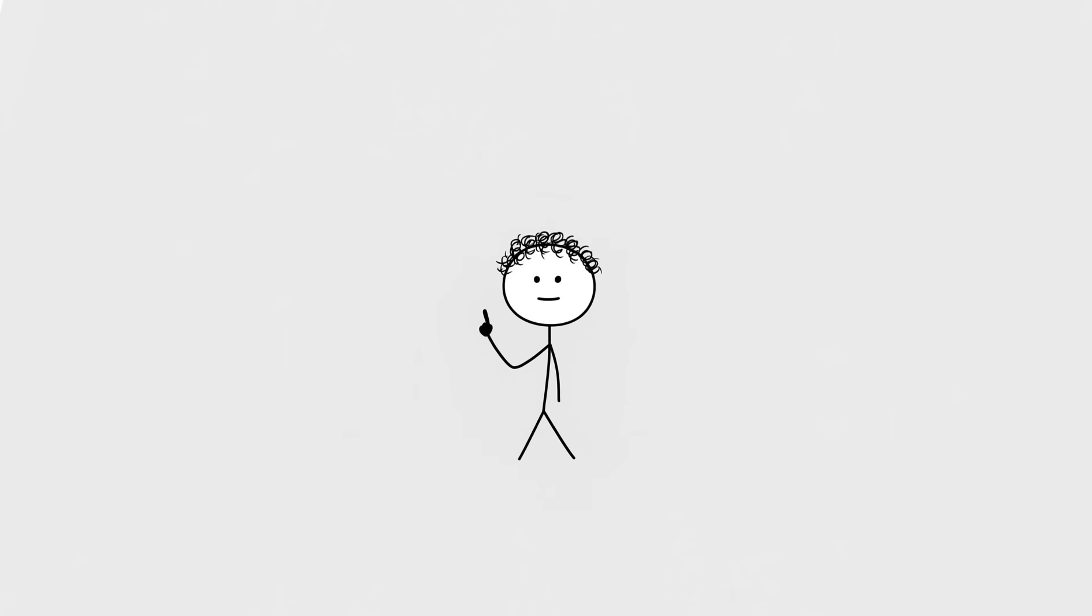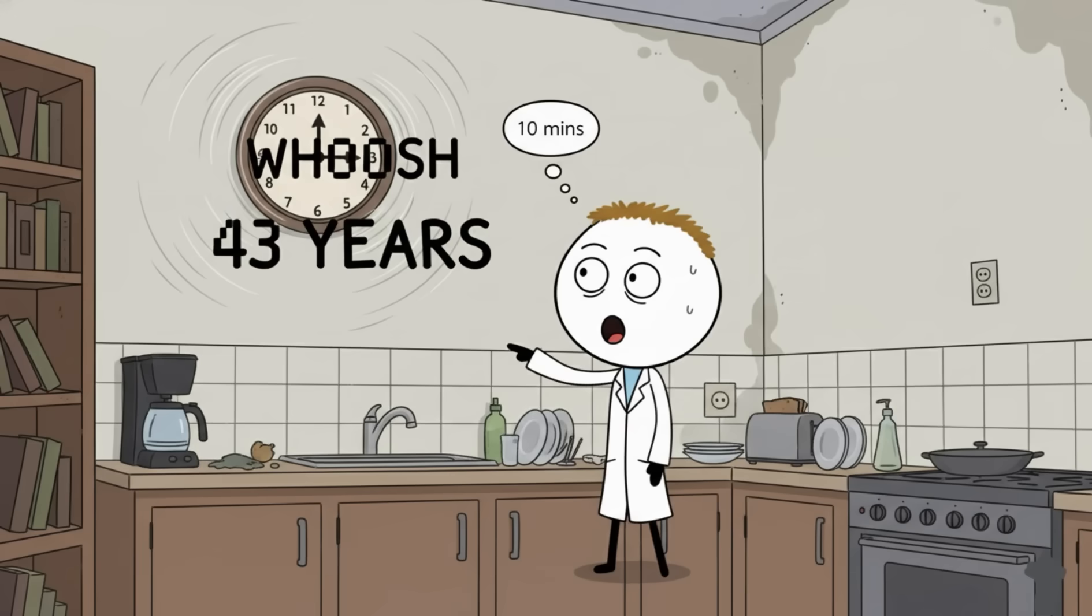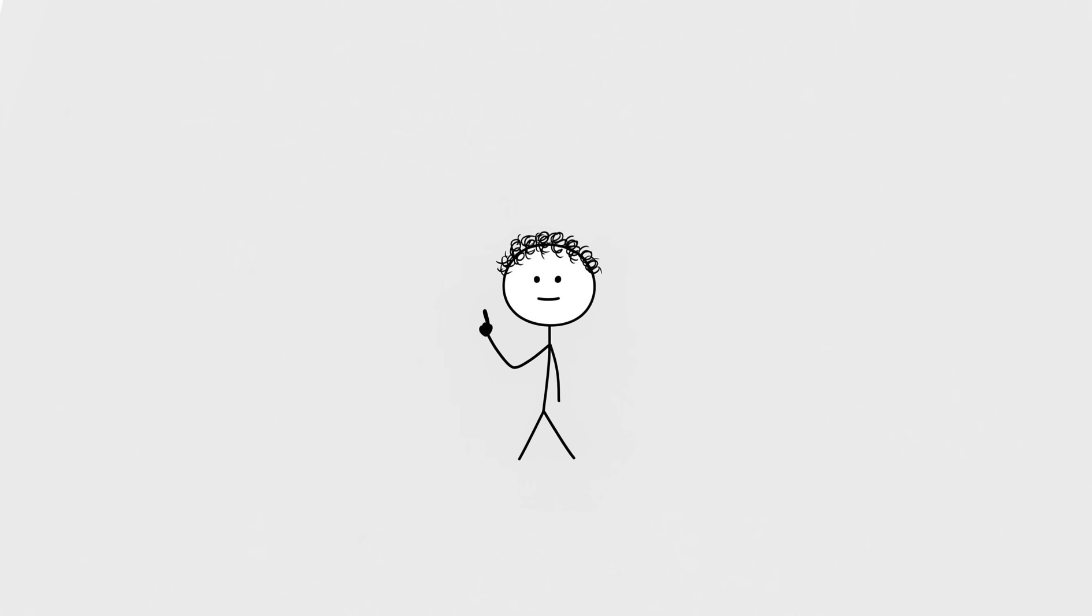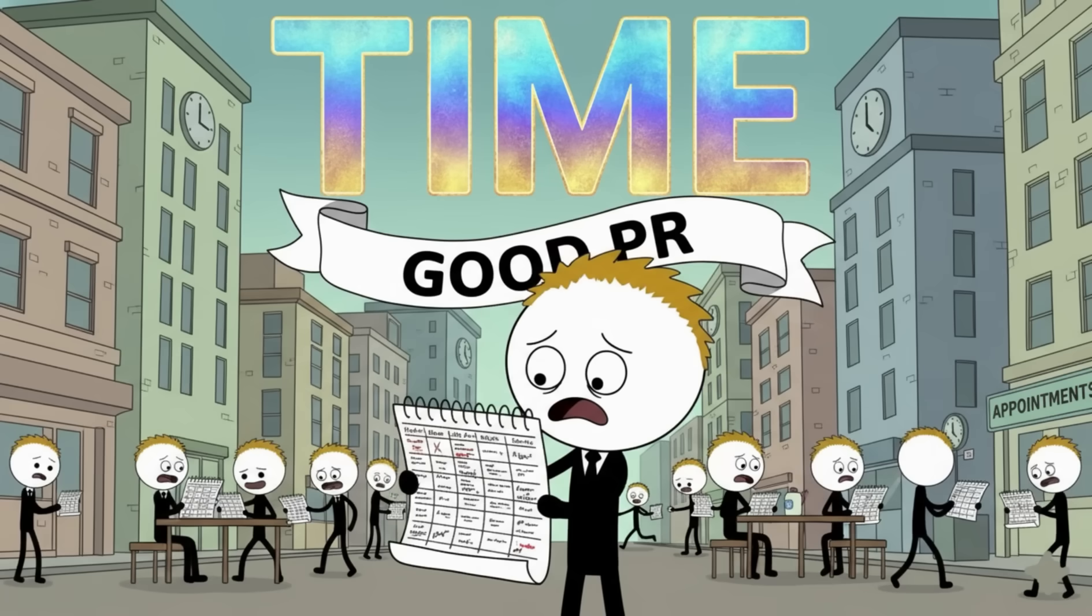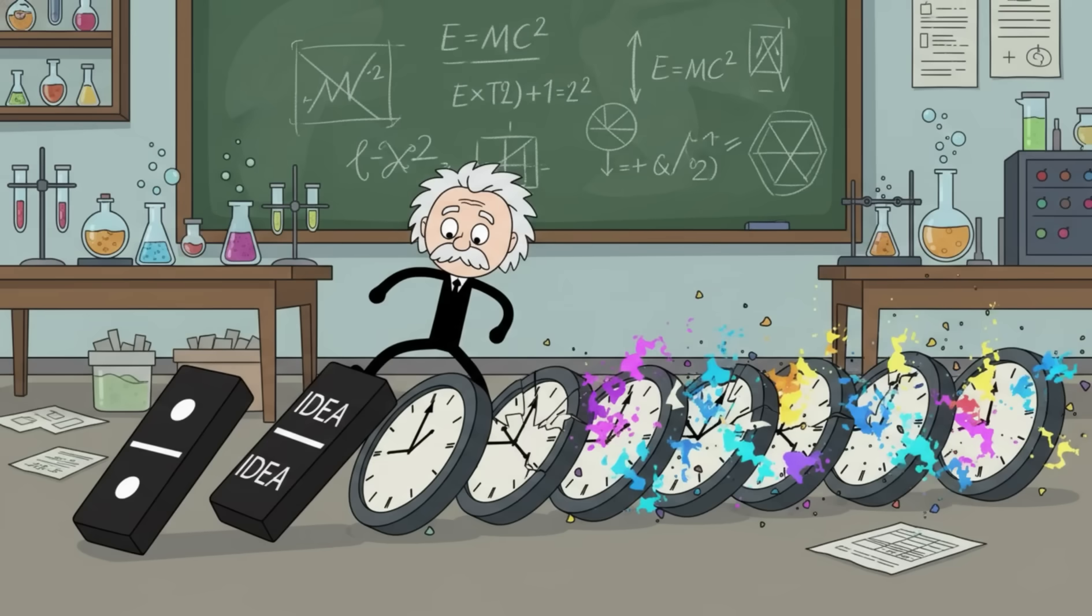Number three: time isn't real. You know that feeling when you glance at the clock, swear 10 minutes have passed, but it's actually been 43 years? Time is slippery like that. But here's the plot twist: physicists don't actually know what time is, like at all. The thing your entire life is scheduled around might just be a cosmic illusion with good PR.